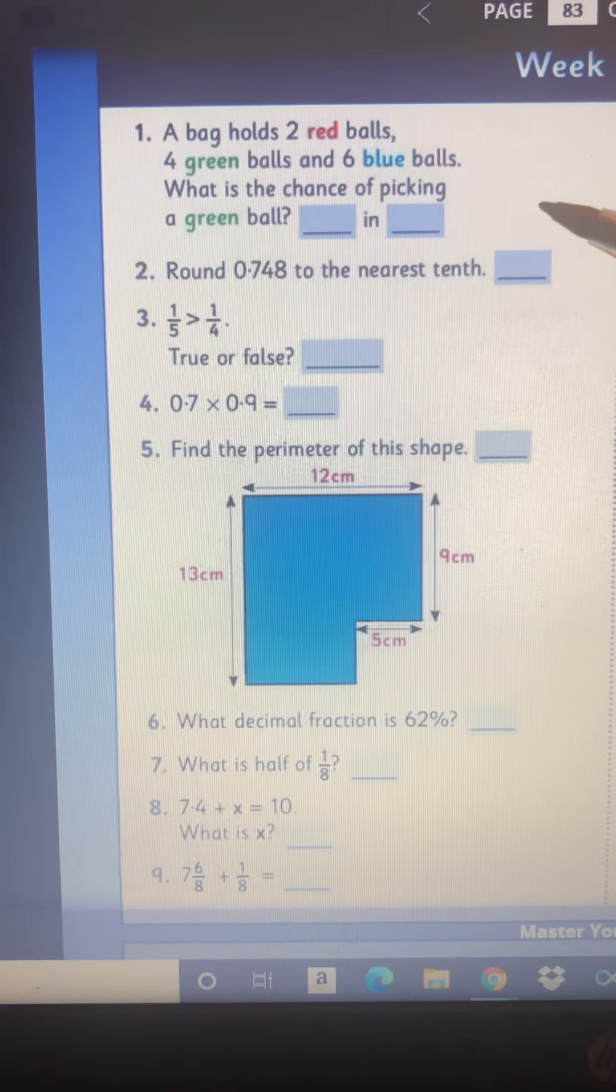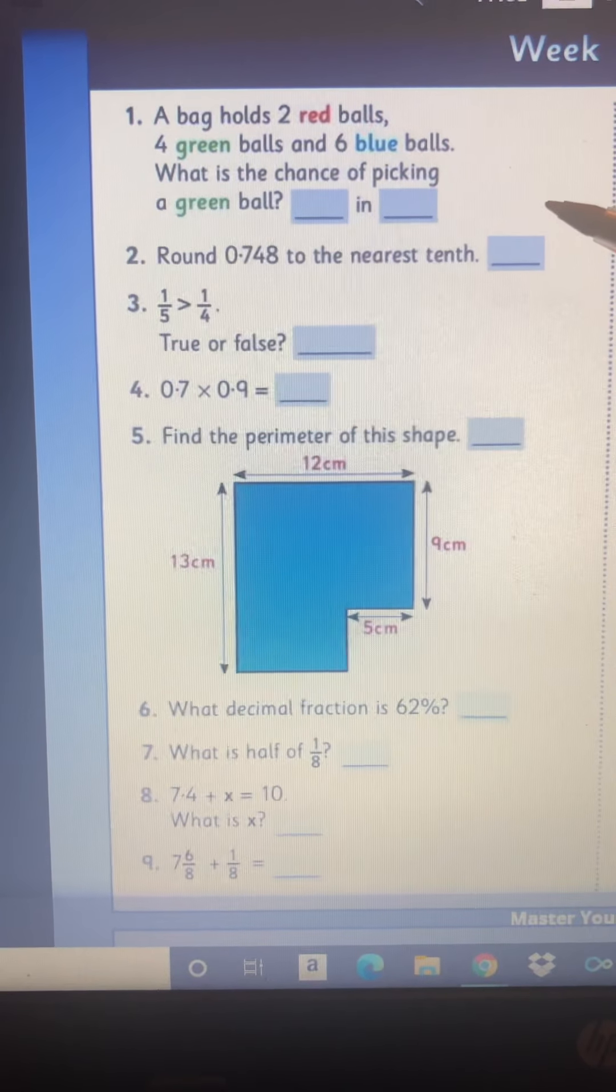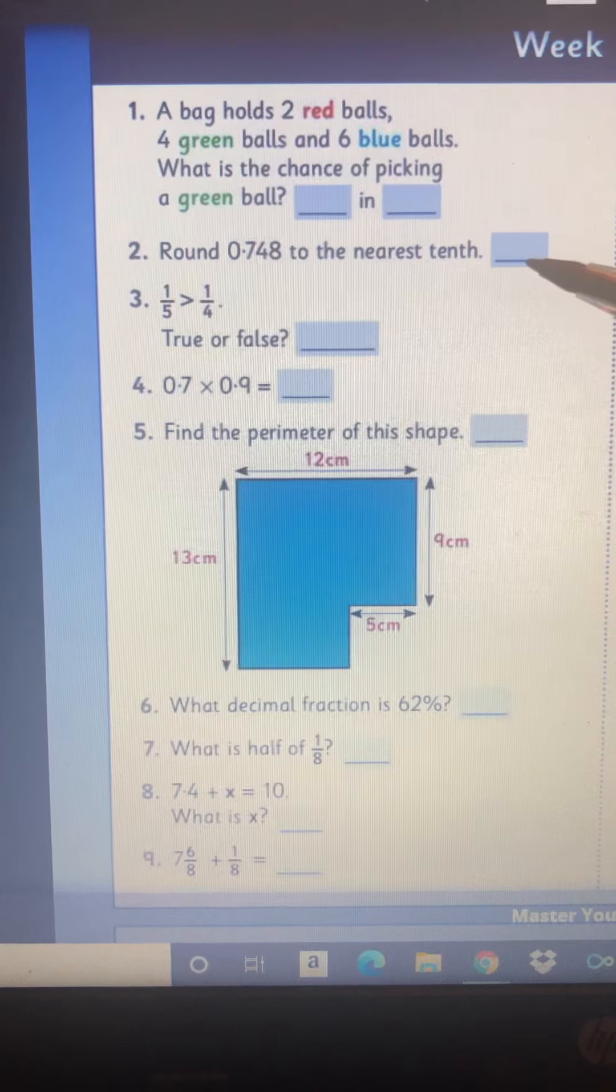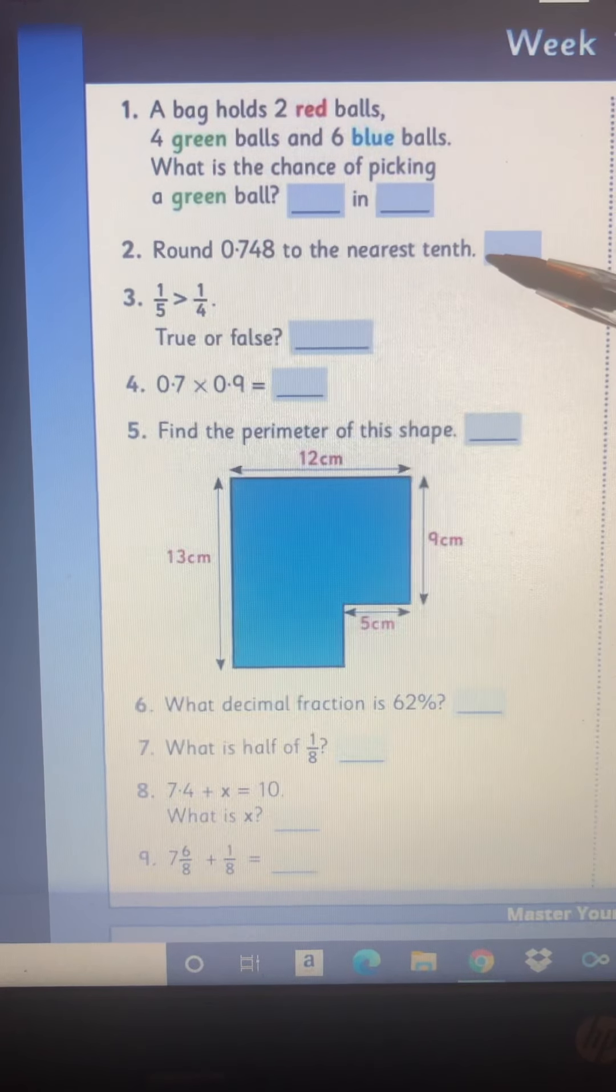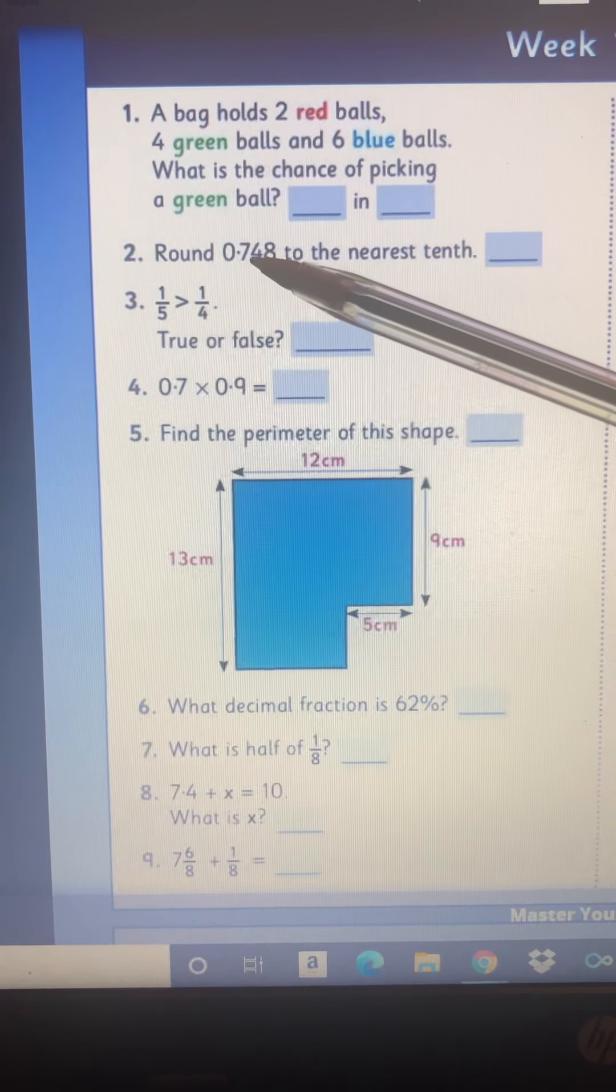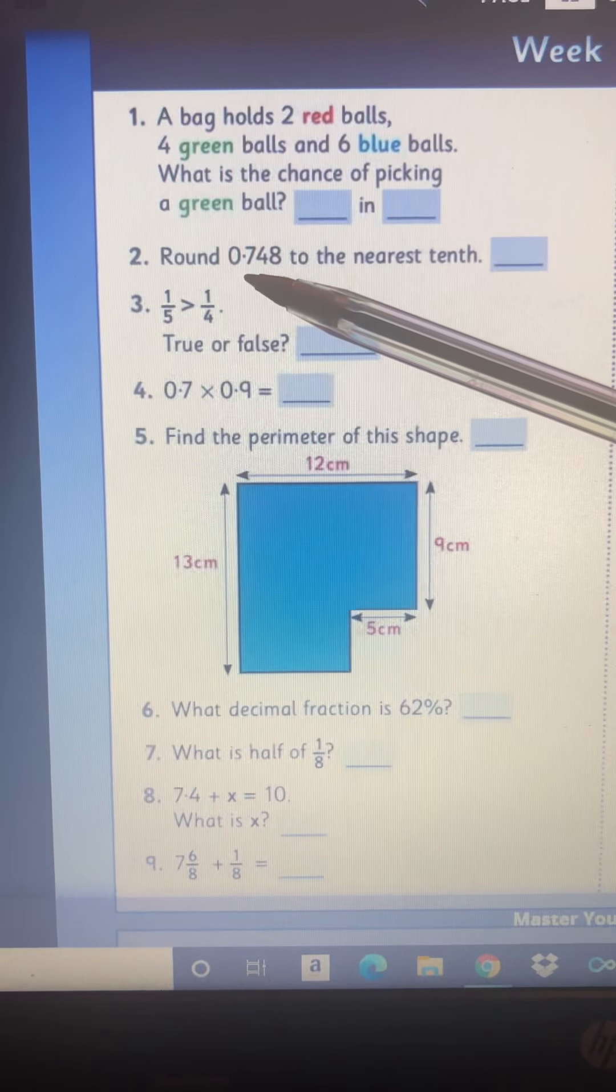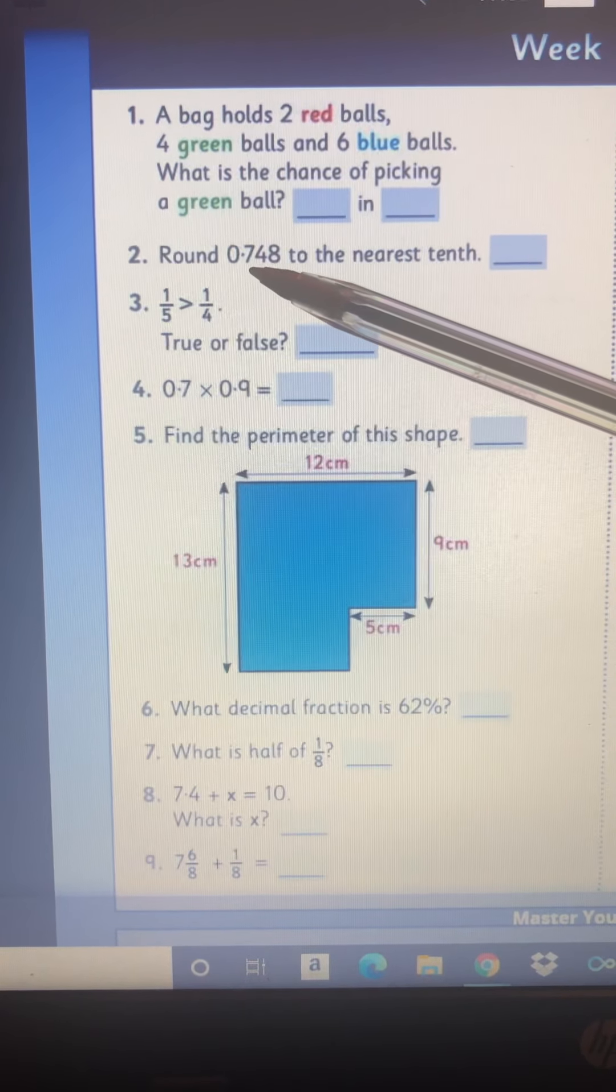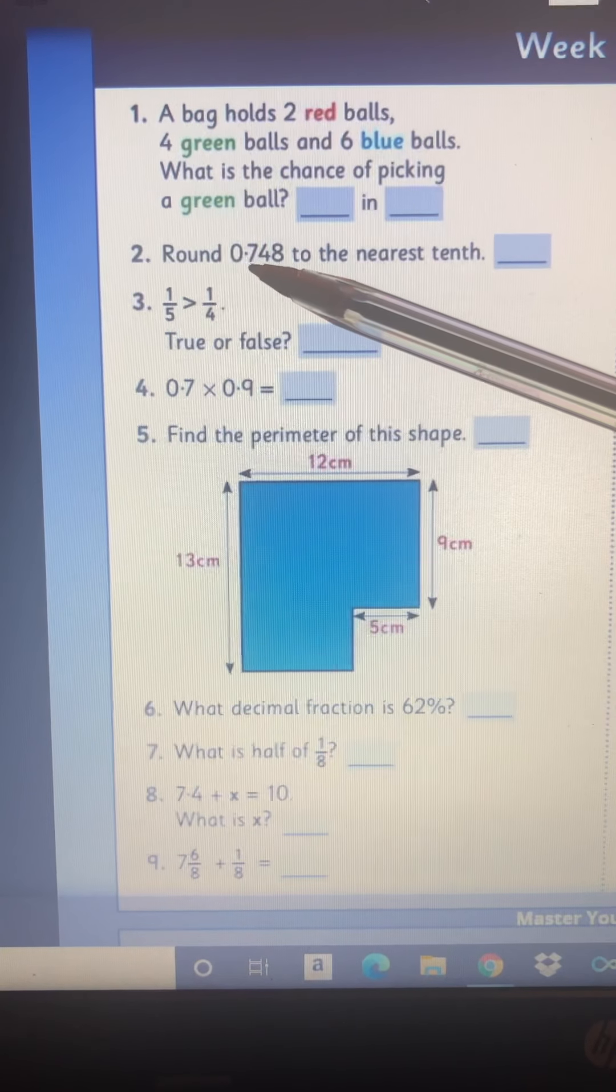Break it down then if you can to its lowest term. You had it during the week in Mastery Maths. Number two, round 0.748 to the nearest tenth. So the nearest tenth is the one place after the decimal point. So you just want it to be zero point something.